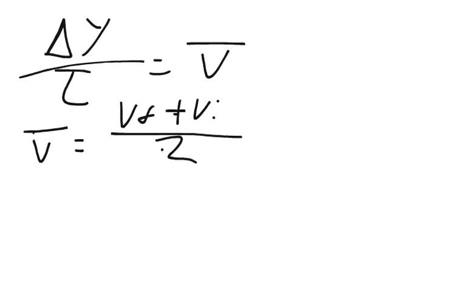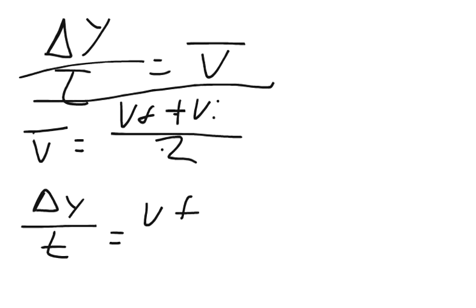So the original velocity plus the final velocity divided by two is the average velocity. And so we could change this formula to say the change in y over t equals vf plus vi over two. Then we could even move the t out to make it change in y equals all of this over two times t.